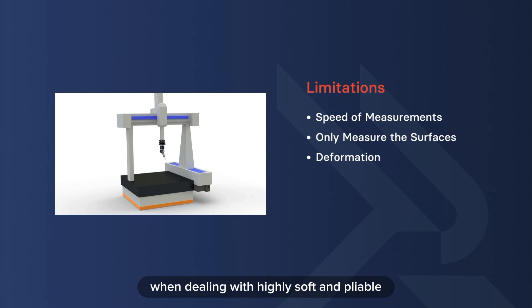When dealing with highly soft and pliable rubbers or elastomers, there is a possibility that they may deform upon contact with the probing device. This deformation can result in slight surface deflection and potentially result in inaccurate readings.